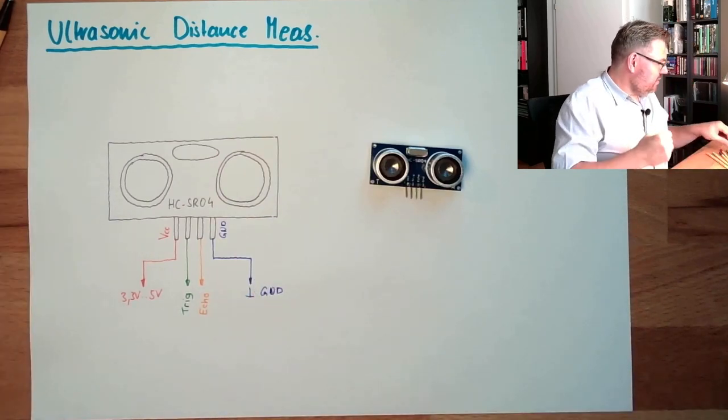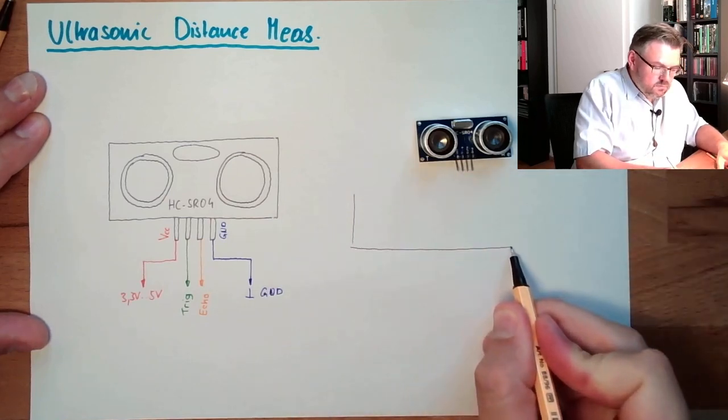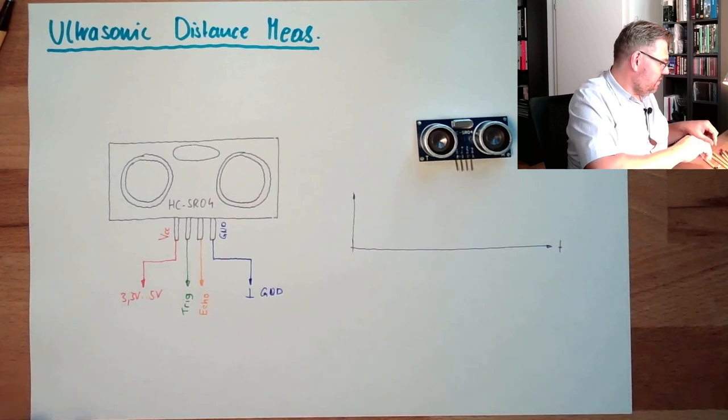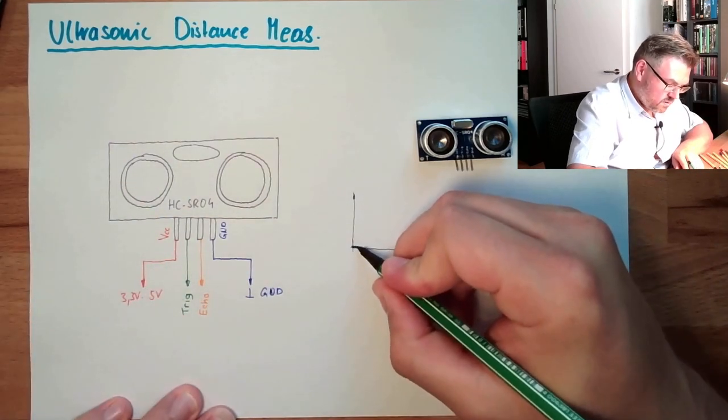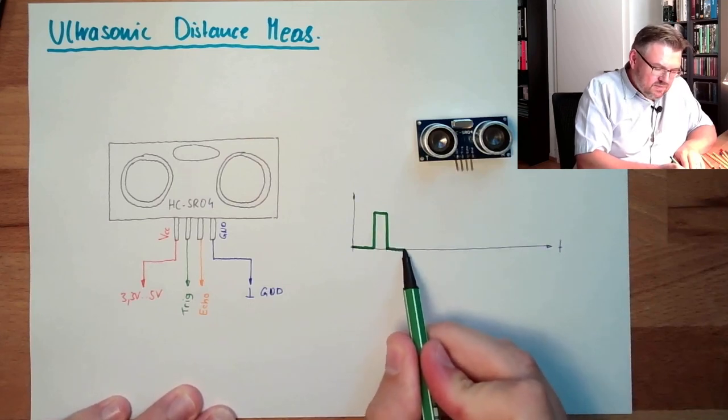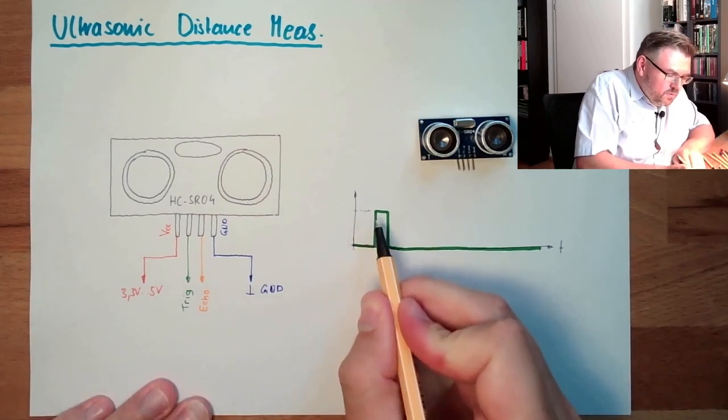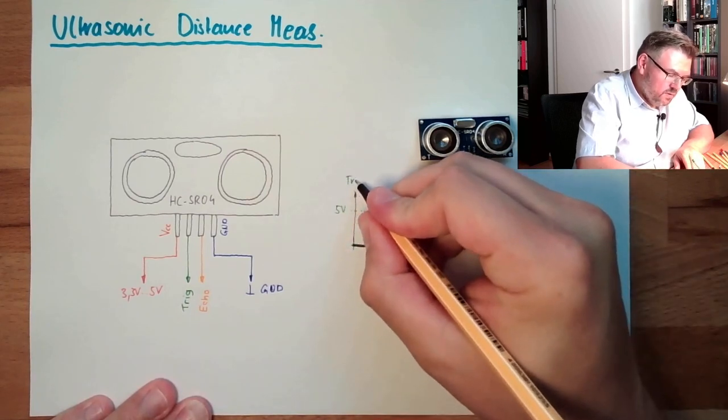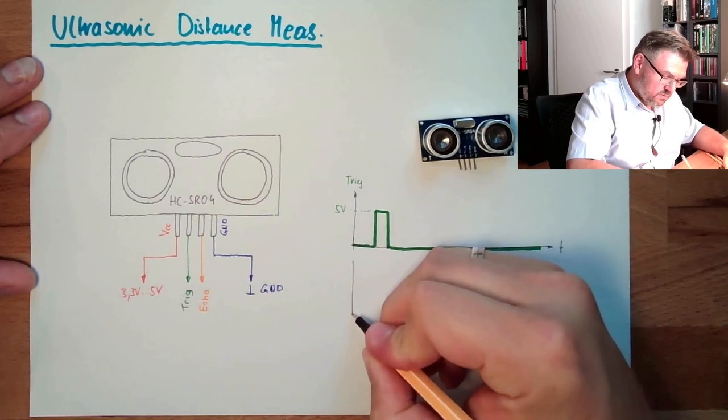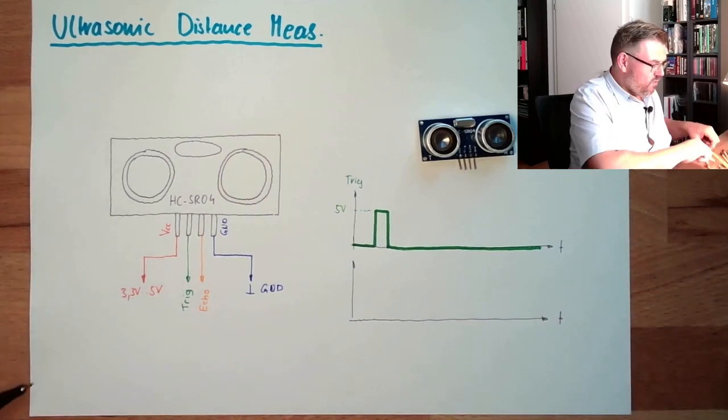What does it mean? What do we do with this trigger and echo? Well, at some point in time, we have to give the trigger a rising edge. There is the trigger, rising and falling back to zero. This must have at least some microseconds. Let's look in the datasheet. So we are going up to 5V here. This is the trigger. This trigger is triggering this device to issue an ultrasonic impulse. Now the ultrasonic impulse is underway.